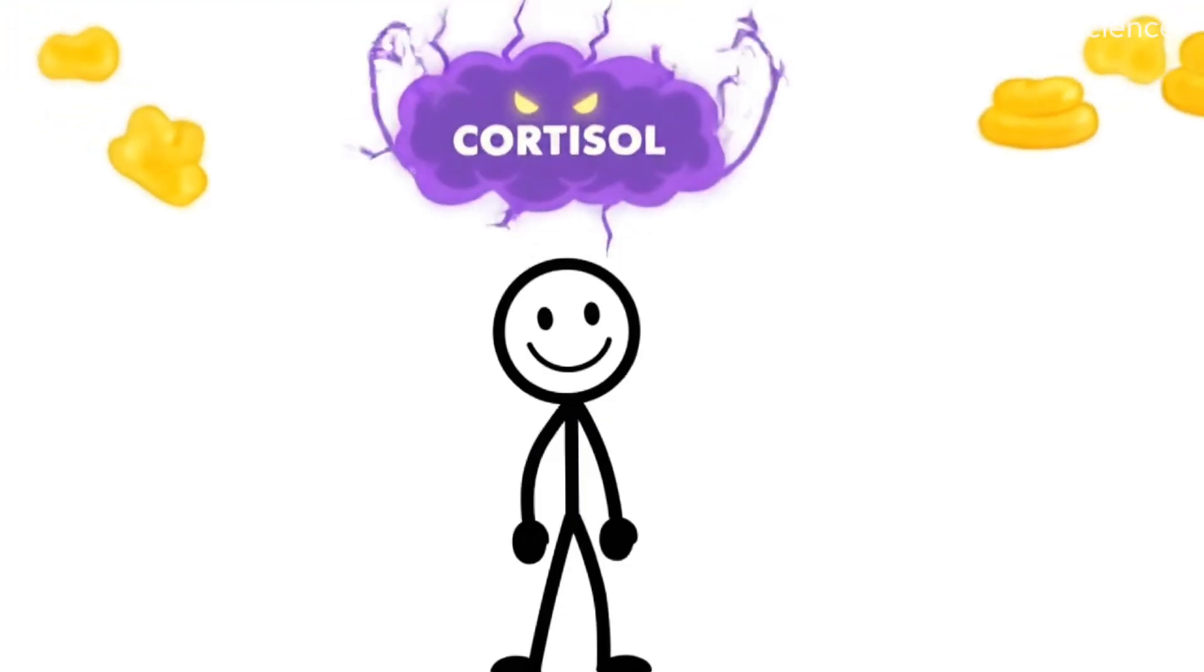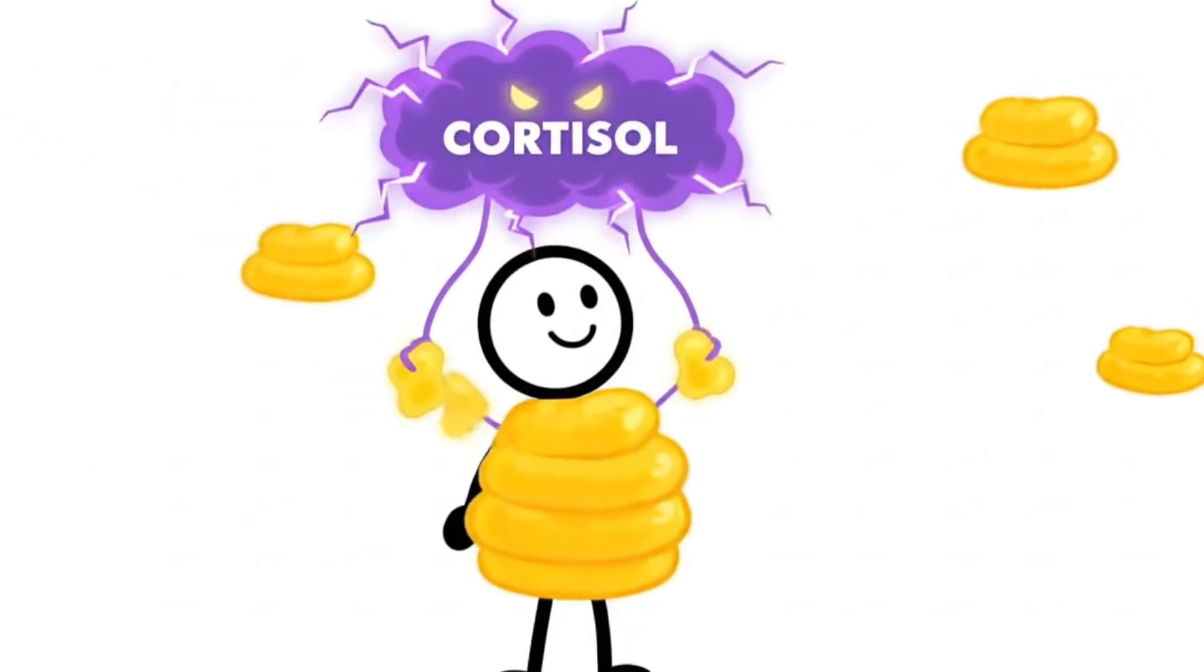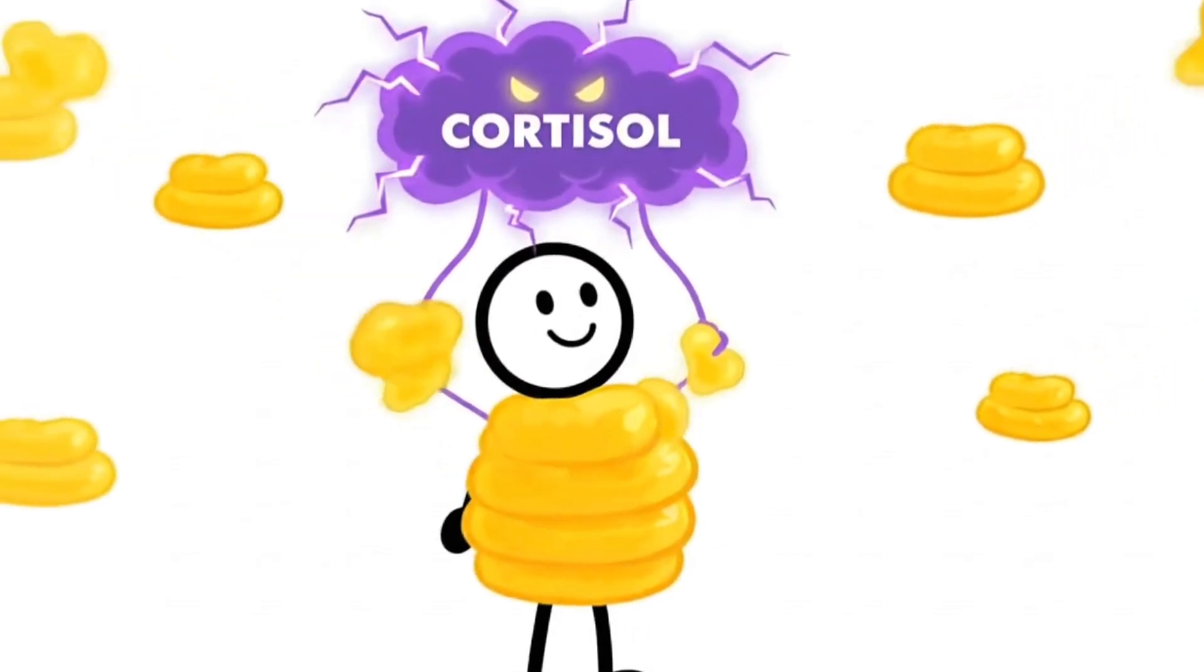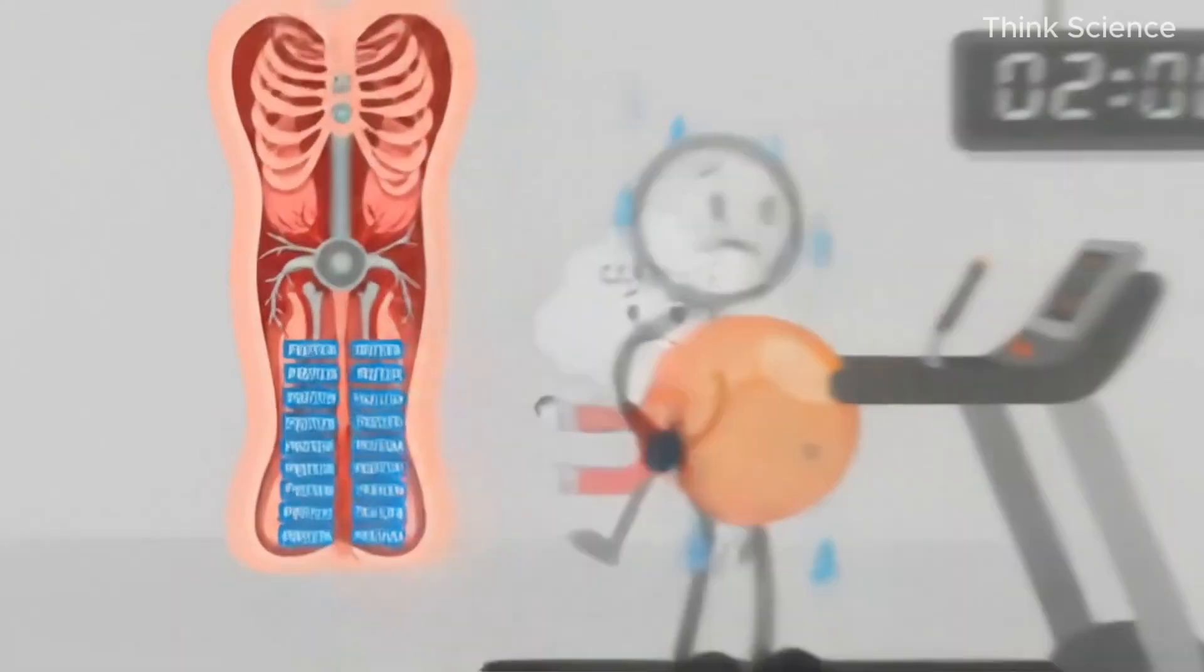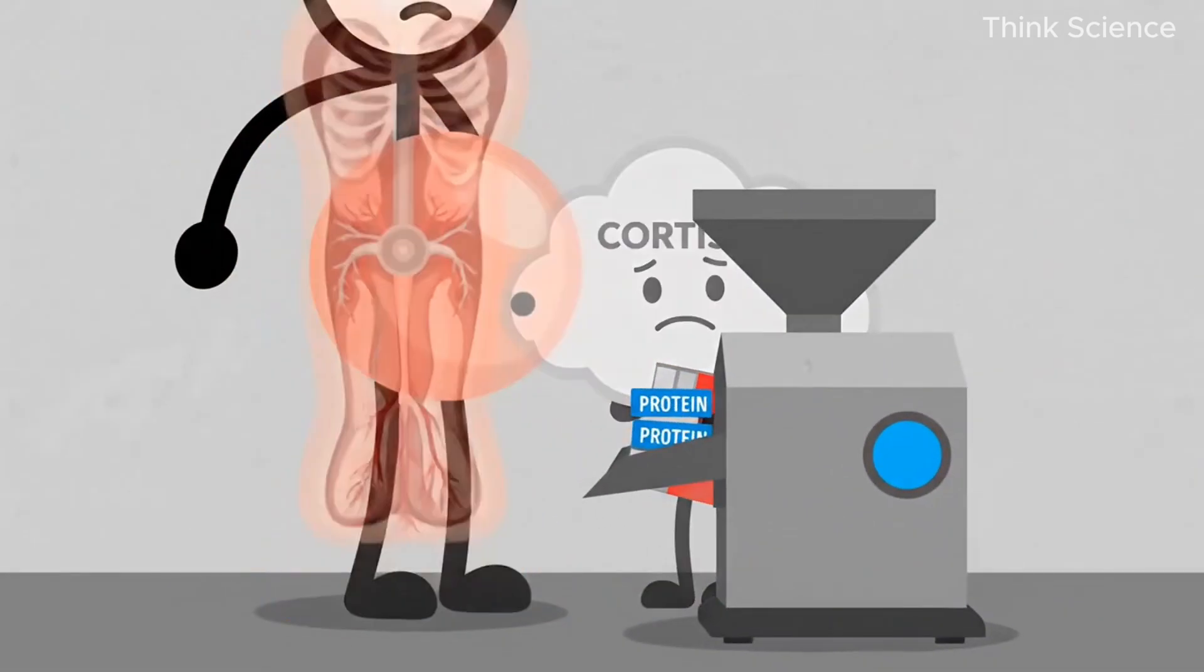Next, cortisol, the stress hormone. It pushes fat to the belly, especially when you're exhausted, overwhelmed, or sleep-deprived. It pulls protein from your legs and converts it to sugar, which becomes belly fat.